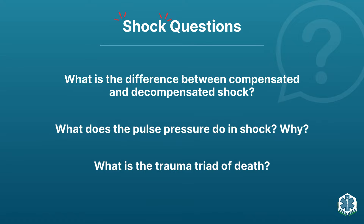The pulse pressure narrows in shock. Pulse pressure narrows because cardiac output drops. Say this is hypovolemic shock — I've had arterial bleeding for about a minute and lost about a liter, maybe a liter and a quarter of blood. My pulse goes up, respirations go up, and stroke volume drops. Cardiac output is represented by the systolic blood pressure; vascular resistance is represented by the diastolic. My diastolic goes up a little due to peripheral vasoconstriction and increased vascular tone, while systolic drops — giving me a narrowed pulse pressure.